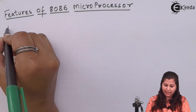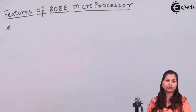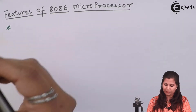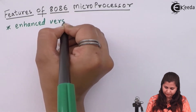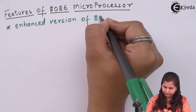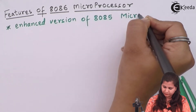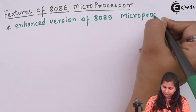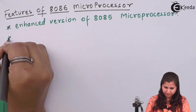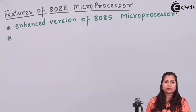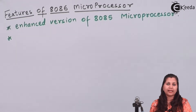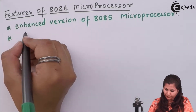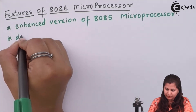First, we can say that the 8086 is an enhanced version of the 8085 microprocessor. This 8086 microprocessor was designed by Intel in 1976.